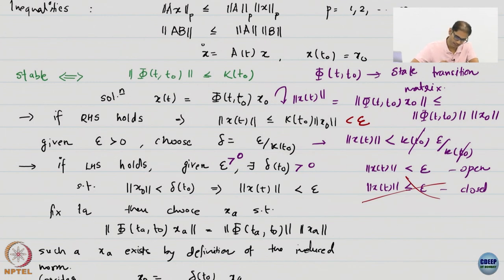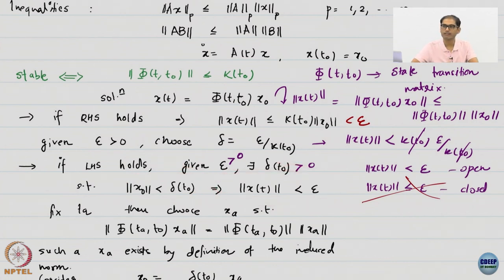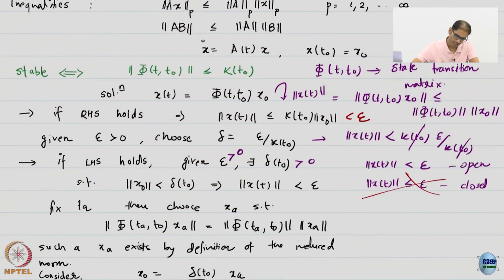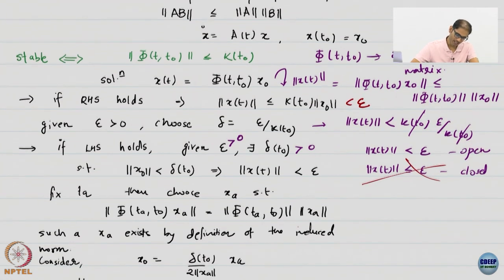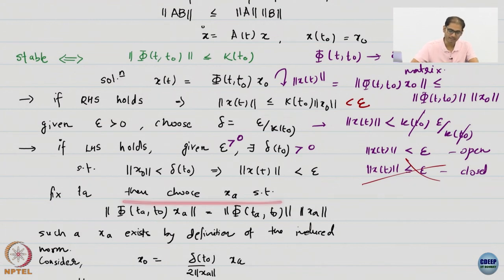This delta is also positive, such that if my initial conditions lie in a delta ball, then my solutions lie in an epsilon ball. This is exactly the definition. Now I say something interesting: I will fix a particular time TA and choose an XA such that a specific condition holds.